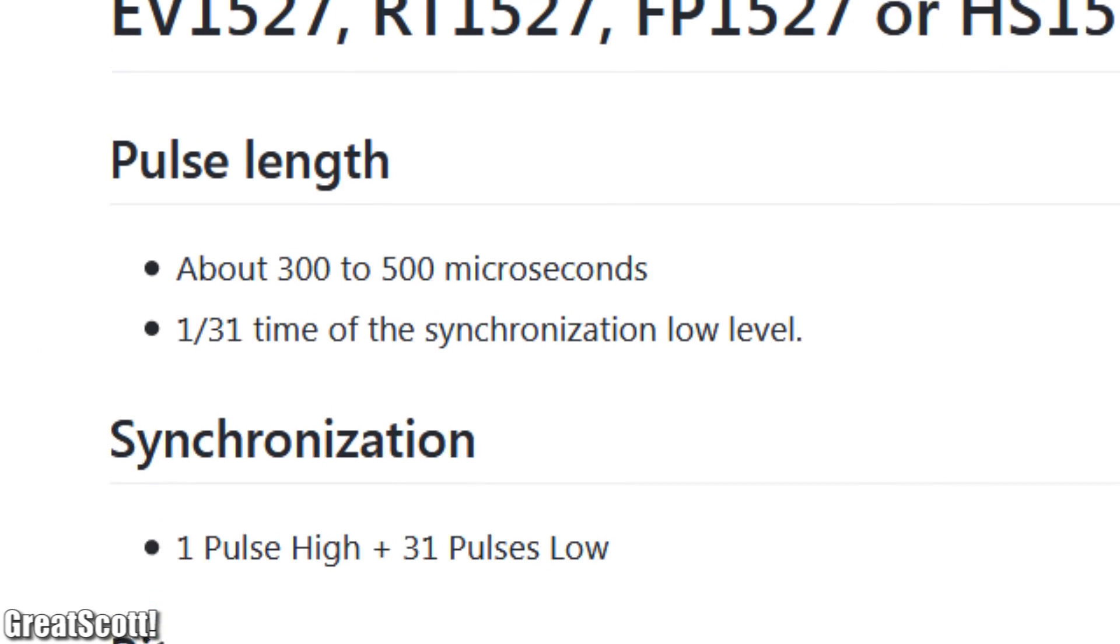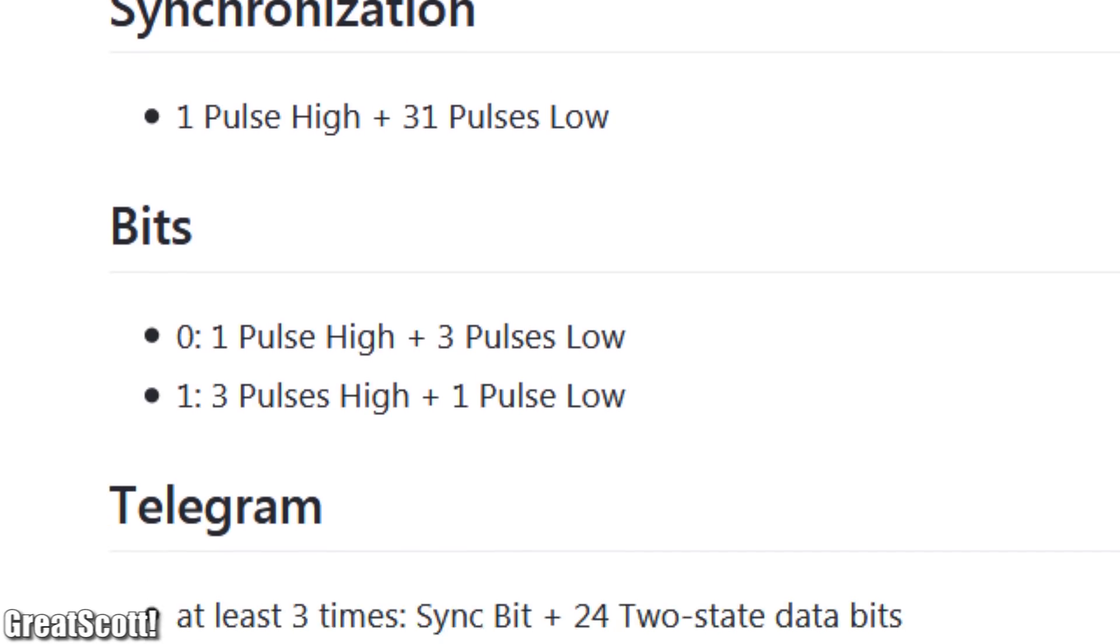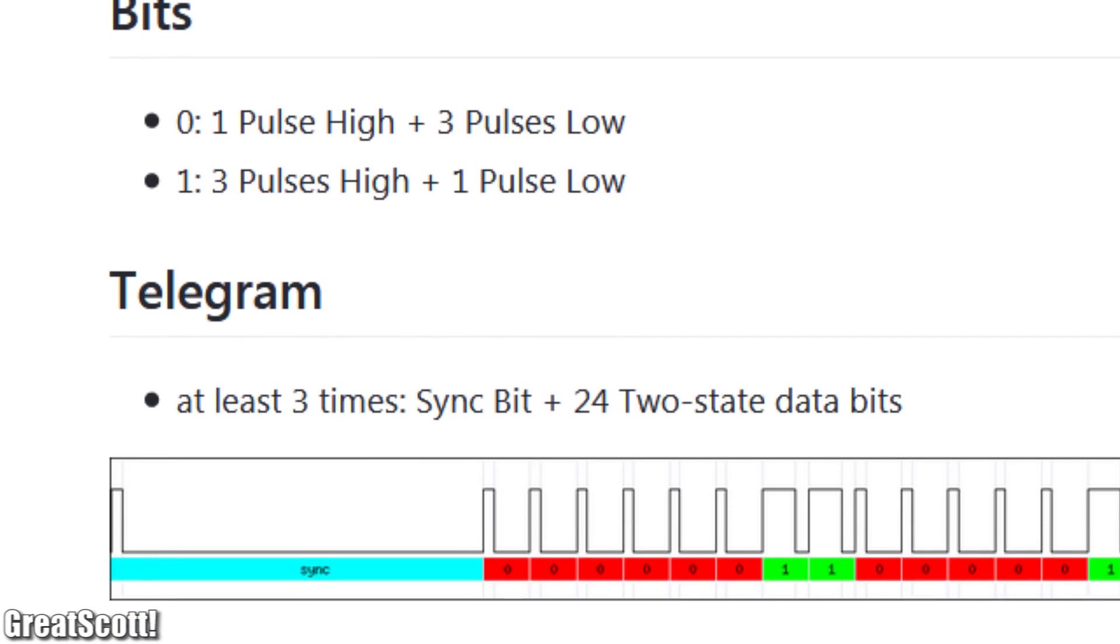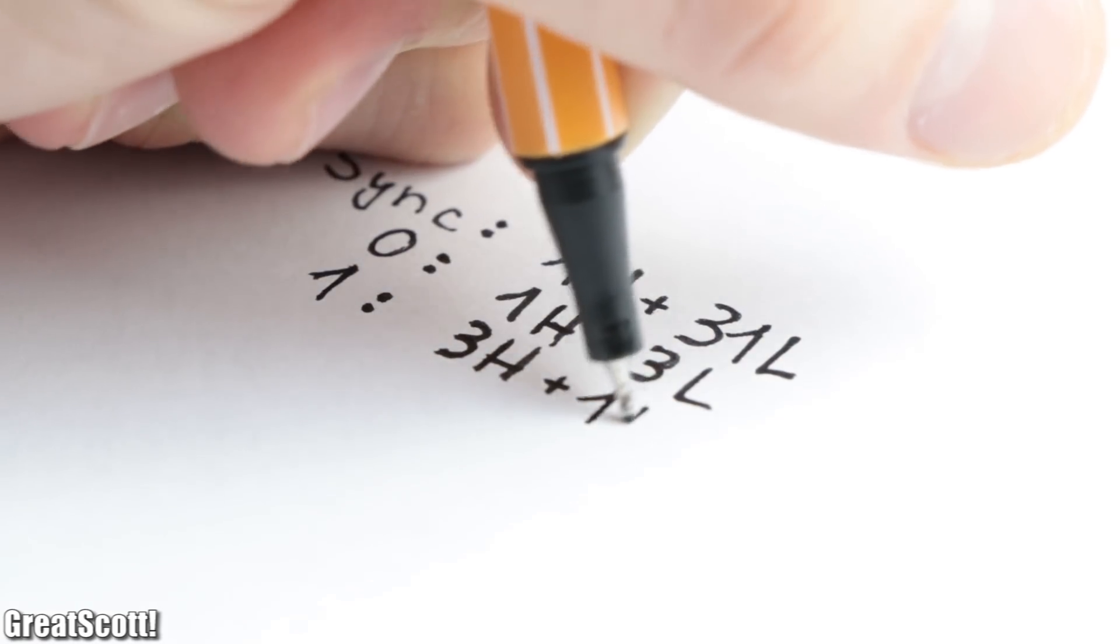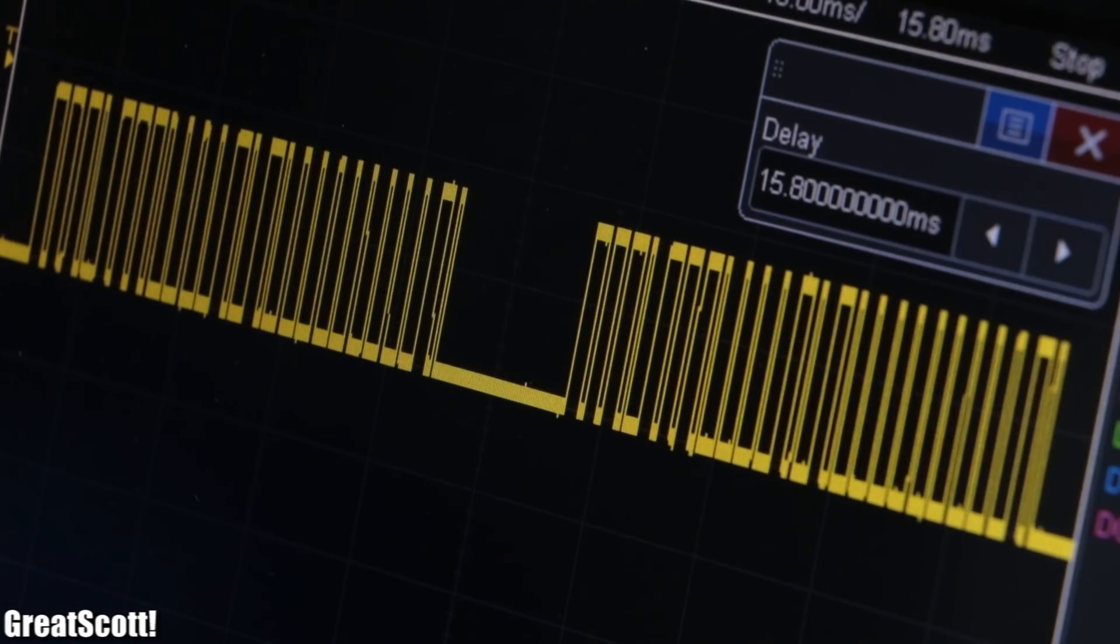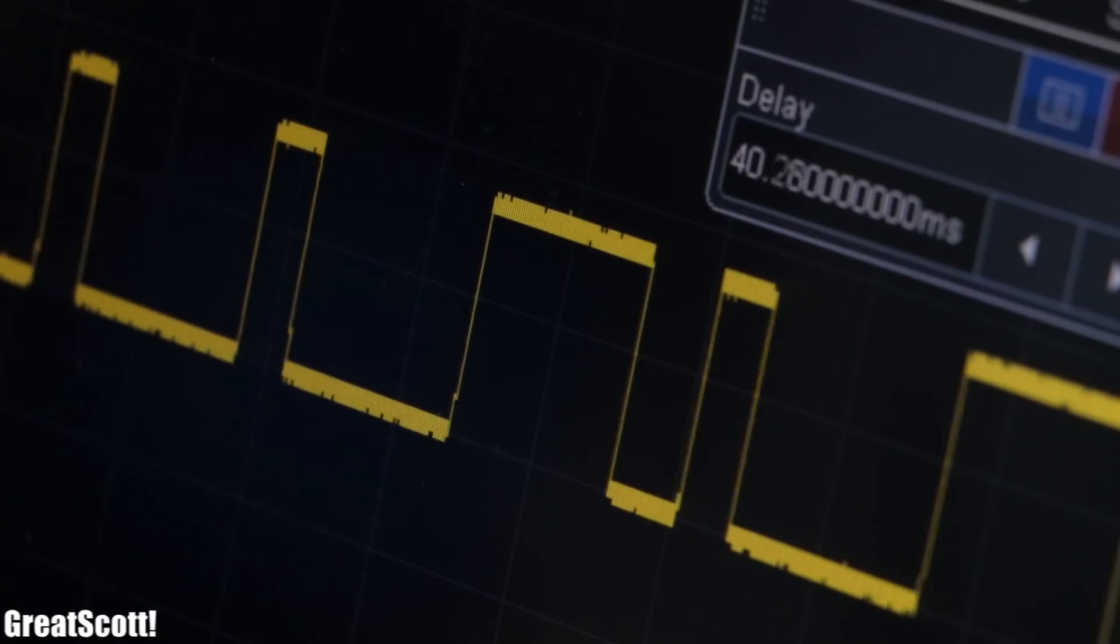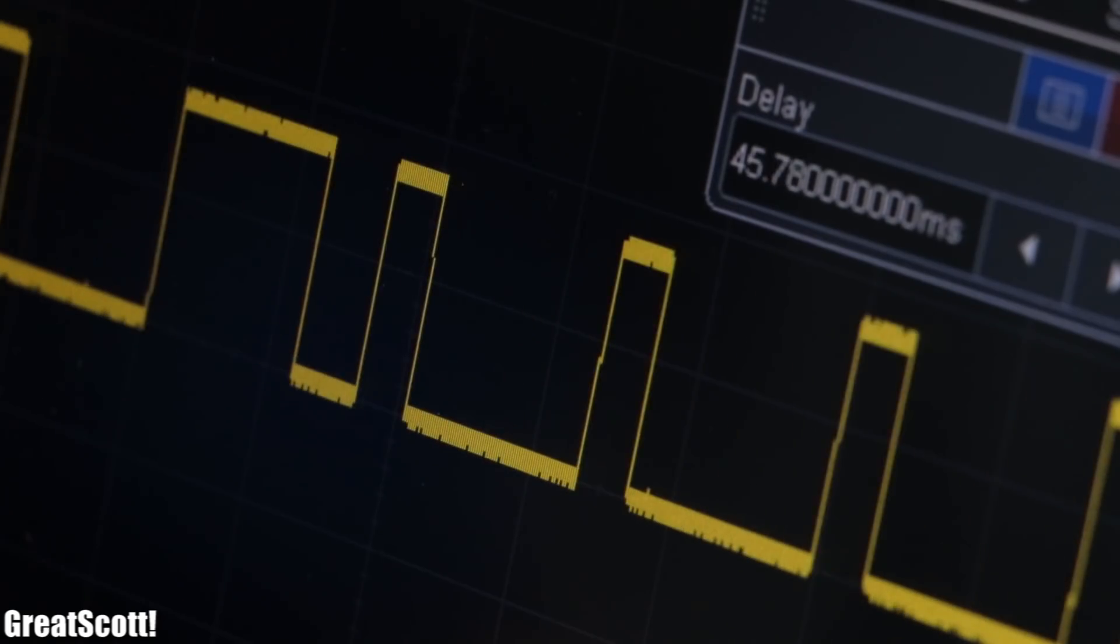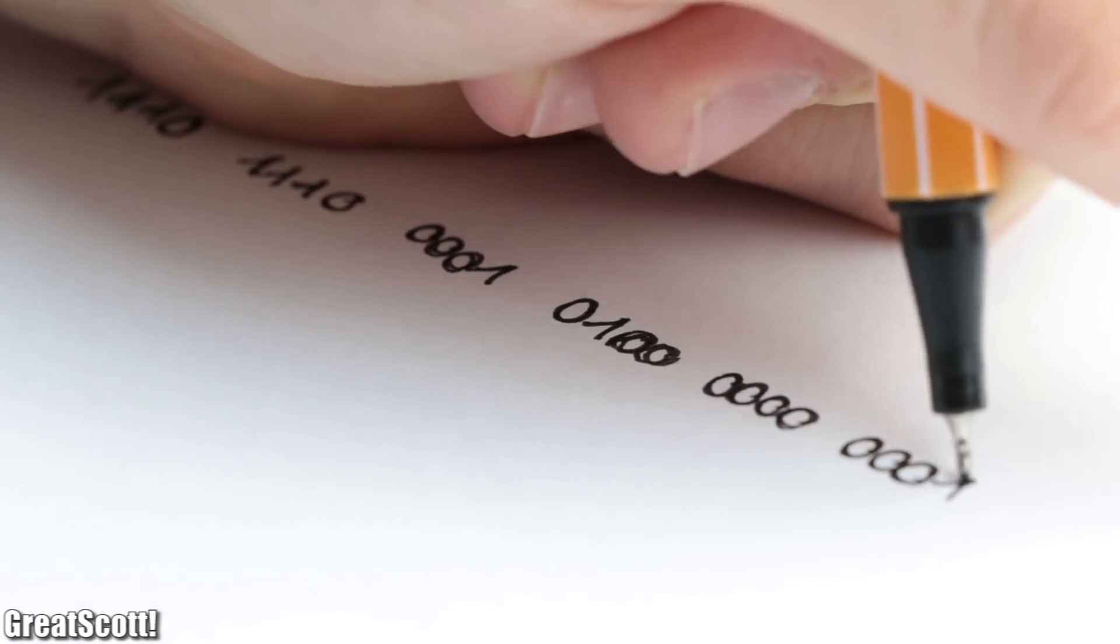After doing a bit of digging in the library's wiki I found out that the protocol is actually an encryption for the sent data, with a synchronization part and with bit 0 representing 1 high and 3 low times and bit 1 representing 3 high and 1 low time. The synchronization part was easy to spot on the oscilloscope and after decrypting the data signal it was exactly the same 24 bit value as the serial monitor spat out. Perfect.